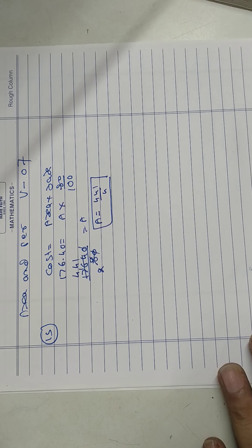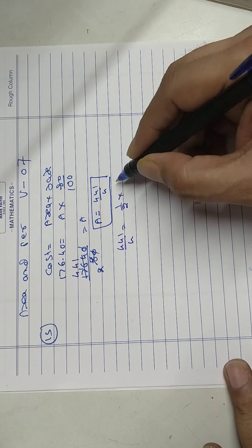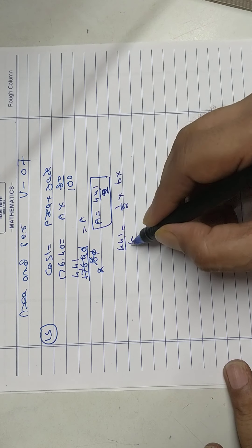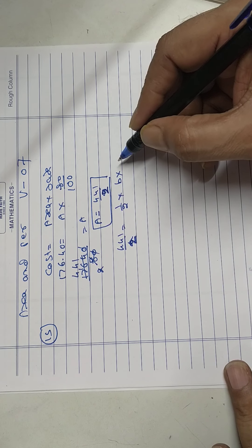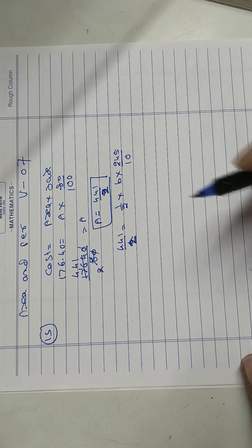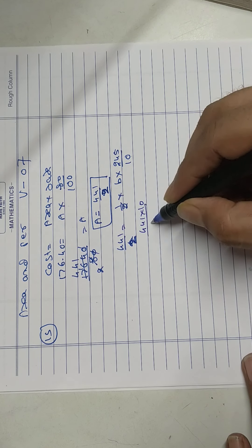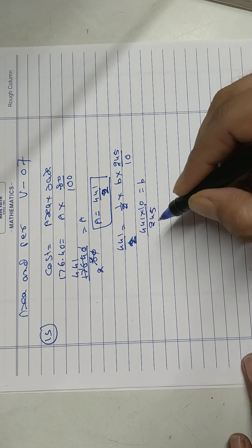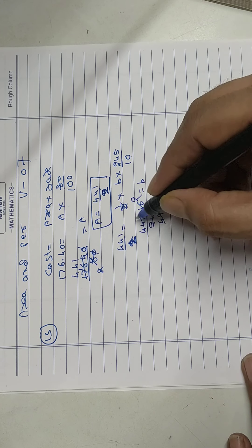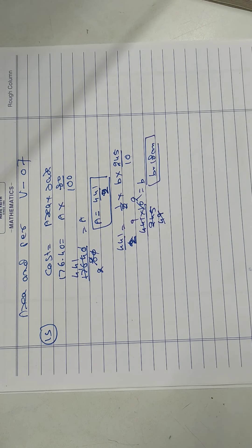Height is given, find the base. Area equals half into base, I don't know, and height is given 245 upon 10. These two cancel. Transfer 441 into 10 upon 245 equals base. Base is 18 centimeters.